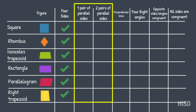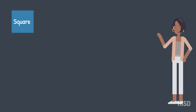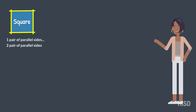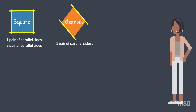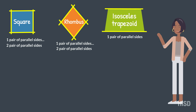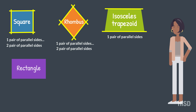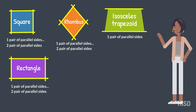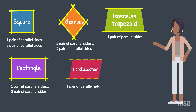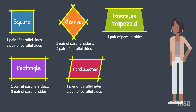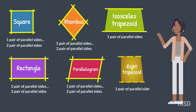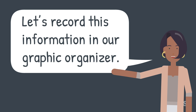Now let's count the number of parallel sides each figure has. Square: one pair of parallel sides, two pairs of parallel sides. Rhombus: one pair of parallel sides, two pairs of parallel sides. Isosceles trapezoid: one pair of parallel sides. Rectangle: one pair of parallel sides, two pairs of parallel sides. Parallelogram: one pair of parallel sides. Right trapezoid: one pair of parallel sides. Let's record this information in our graphic organizer.